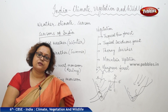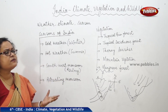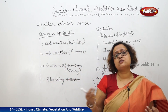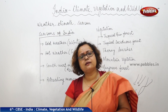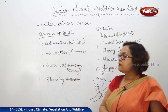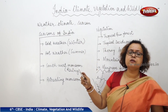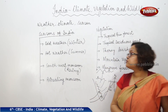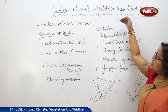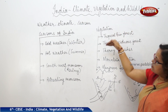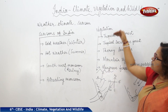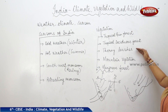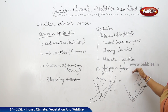Now we come to the vegetation of India. Depending on climate, we can see the natural vegetation of a place. Natural vegetation is what nature nurtures — not what we plant in our gardens. In India, natural vegetation is divided into five major types: tropical rainforest, tropical deciduous forest, thorn bushes, mountain vegetation, and mangrove forest.